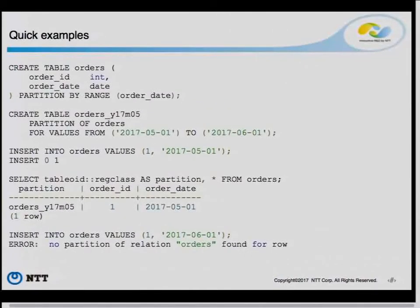Some quick examples. We can do range and list partitioning. For example, if you want to create a range partition table, you have an orders table and you can partition it on the order dates. You just say PARTITION BY RANGE on the column order_date. Then you create a partition using a separate command, specifying the range values you want. You just have a partition table and one partition.